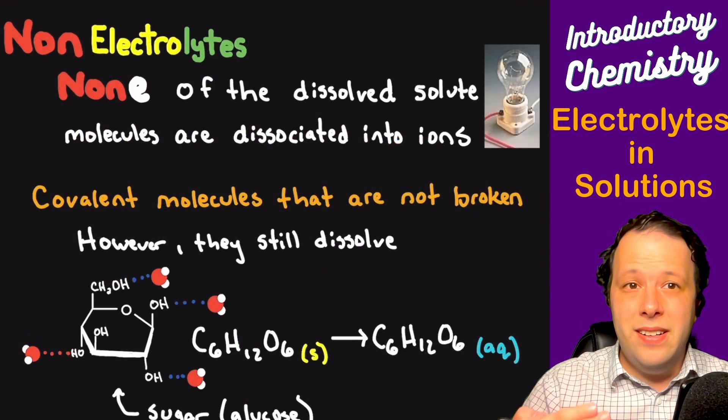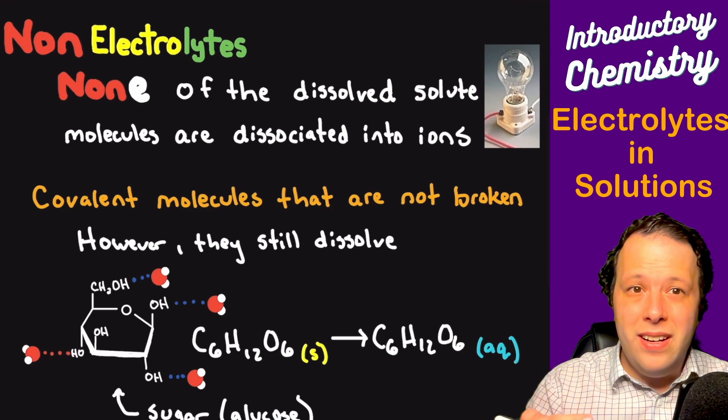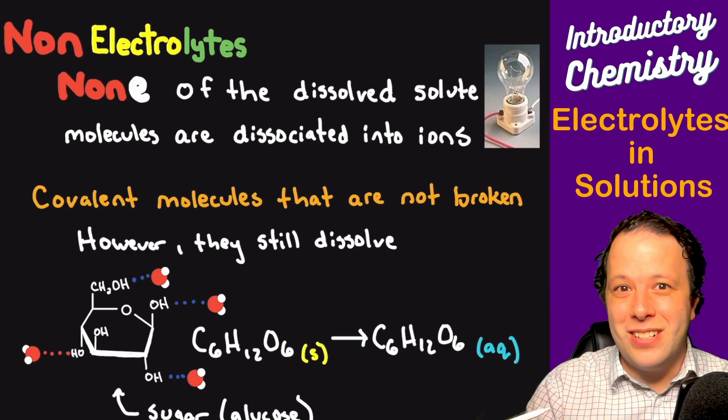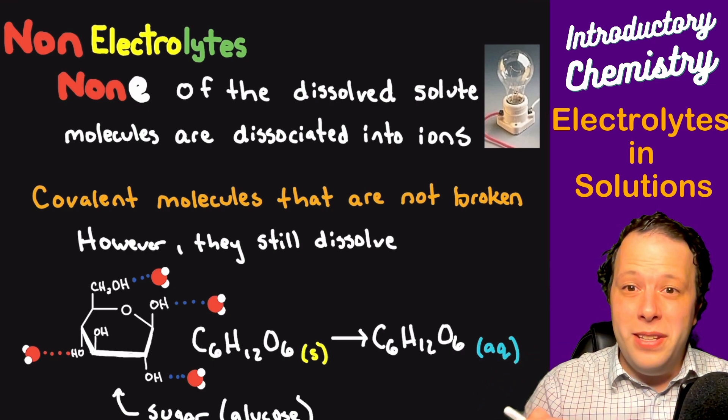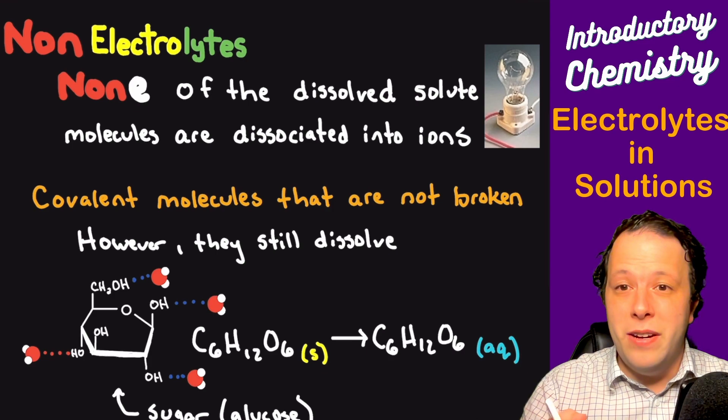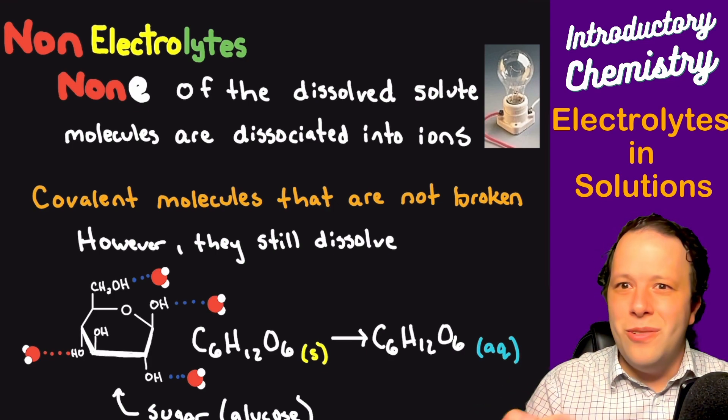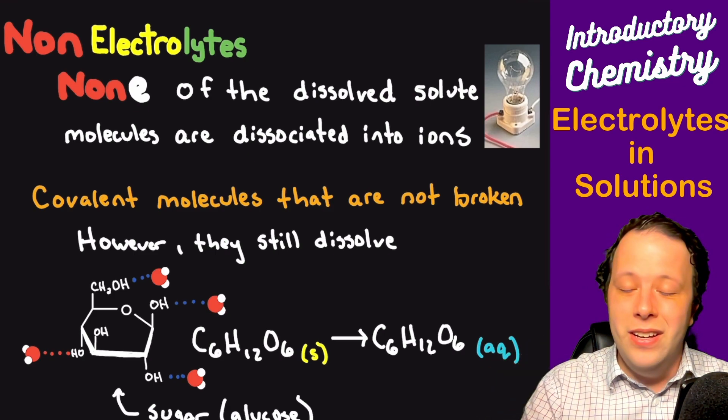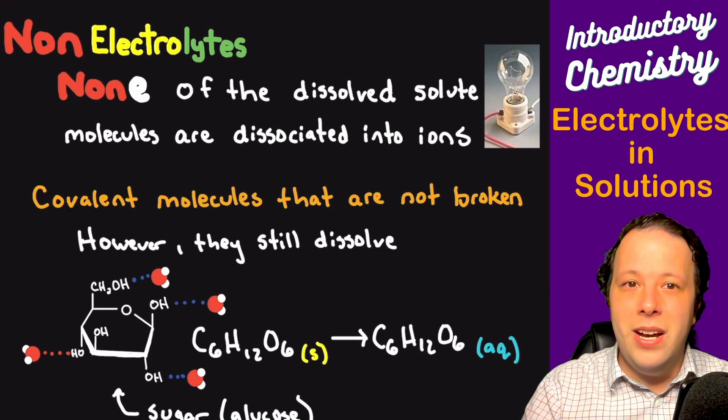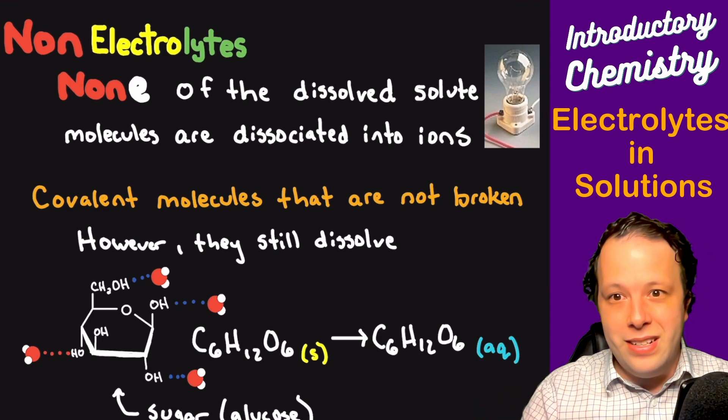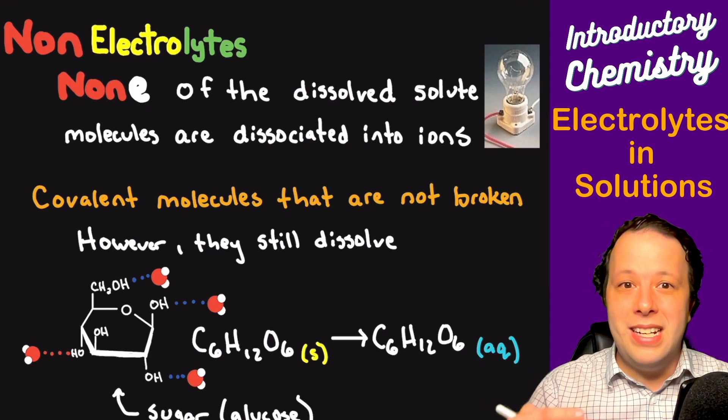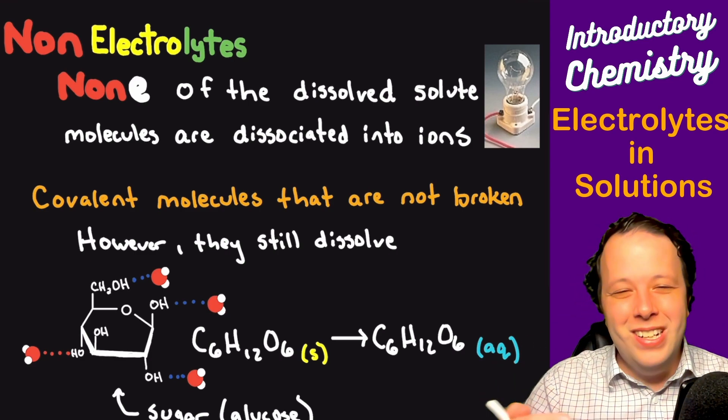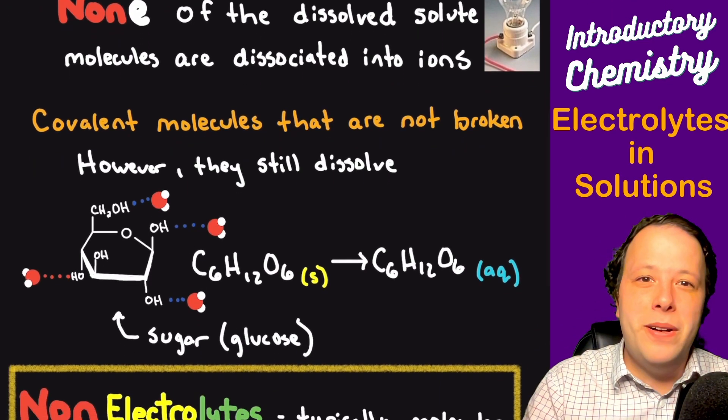The last one is non-electrolytes. Now non, or in this case, whenever we have none of them are actually turning into ions. So you'll have all these dissolved solutes, which means you have polar molecules interacting through dipole-dipole hydrogen bonding. You remember the phrase like dissolves like. Well they dissolve, however, they do not dissociate. So they don't become cations and anions. They stick together as covalent molecules. They're a little too strong to actually break apart. So when that happens, what kind of molecules are these like?